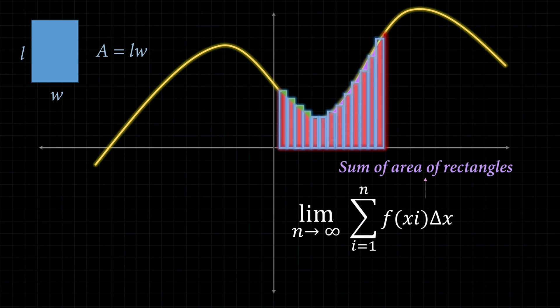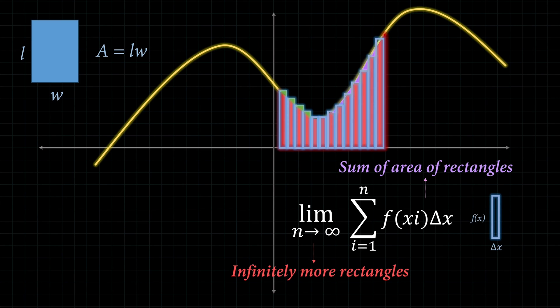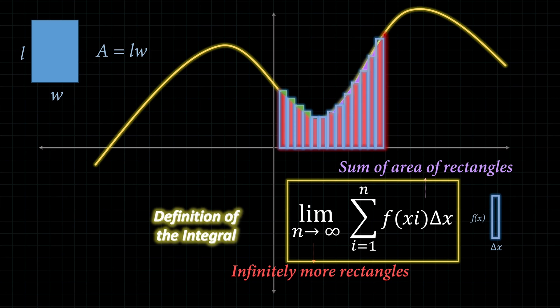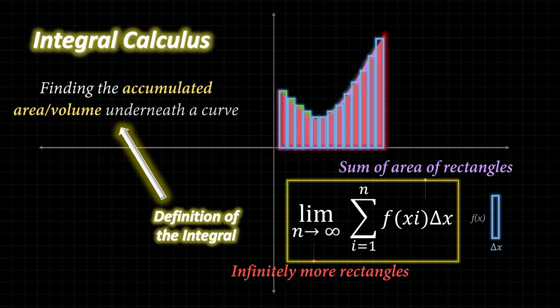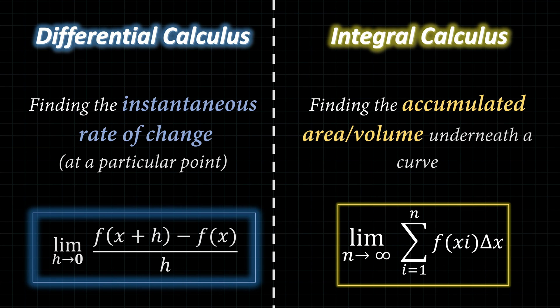And this is where the limit comes in again. The right-hand side of the expression represents the sum of the areas of each rectangle — the big sigma represents a sum, and f(x) times delta-x is just another way of showing length times width of each rectangle. The limit as n approaches infinity represents the fact that we want infinitely more rectangles. The answer to how many rectangles we can fit is infinite — we can make rectangles infinitely thin. This is known as the definition of the integral, the foundation of integral calculus.